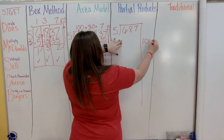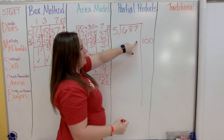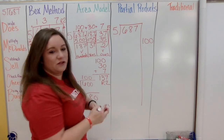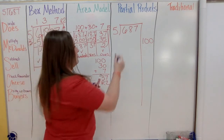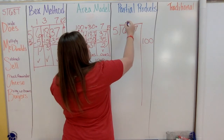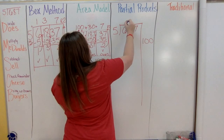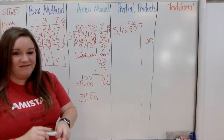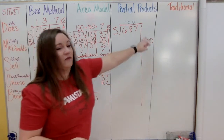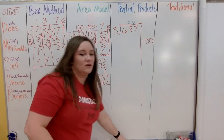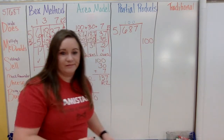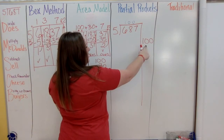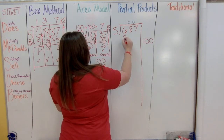So I put 100 over to the side. Some teachers have students write 100 up on top — you'll see both ways. Five times 100 is 500.